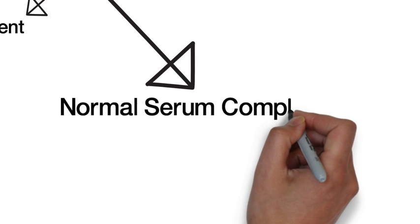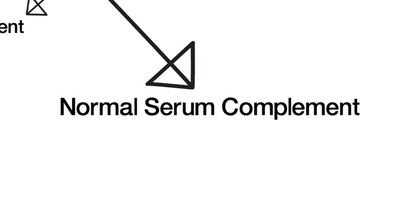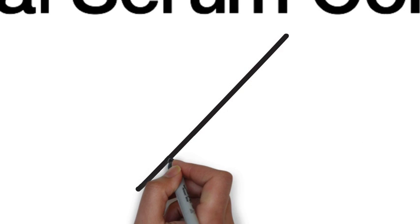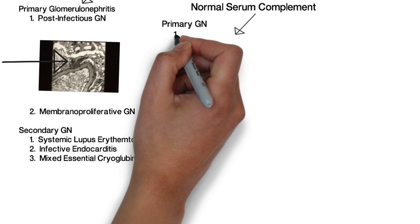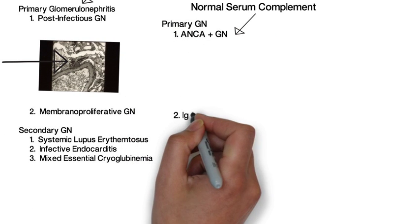Now, let's turn to normal serum complement. Normal serum complement would do the same thing. They're either primary diseases or systemic diseases of the kidney. And the primary diseases, again, present only with symptoms of kidney disease, primarily worsening renal function and hypertension.